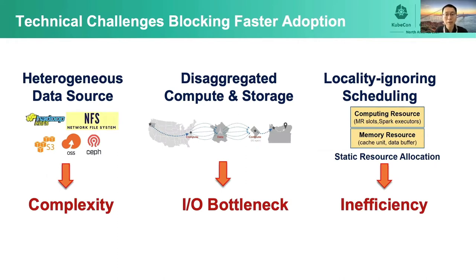As data applications are deployed into Kubernetes clusters, developer productivity improves and costs are saved. But this also brought new technical challenges: it is not good at handling heterogeneous data sources, it introduces data I/O latency due to the disaggregated computing and storage architecture, and it lacks the capability of being aware of data affinity during workload scheduling. These challenges slow down the adoption of data-driven applications on cloud-native platforms like Kubernetes.